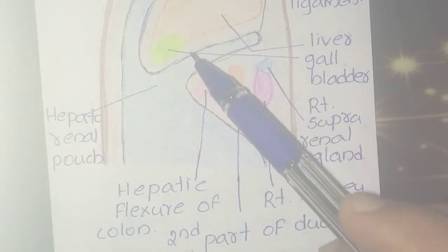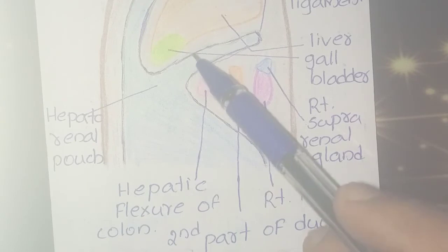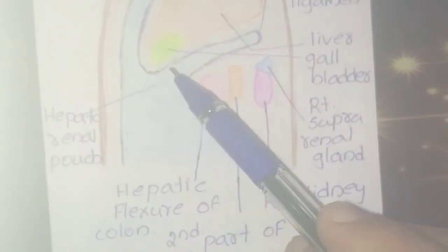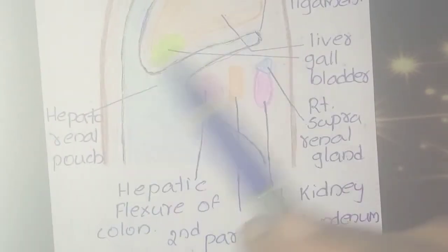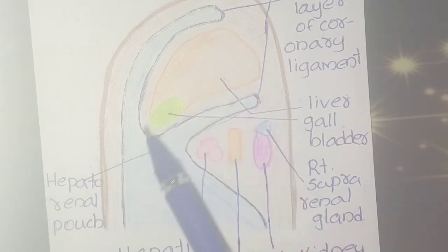On the left side it communicates with the omental bursa, and on the right side it is limited by the diaphragm. That covers all the relations of the Hepatorenal pouch.